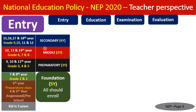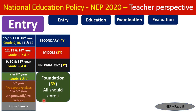NEP 2020 gives education in four levels: Foundation (5 years), Preparatory (3 years), Middle (3 years), and Secondary (4 years) — totaling 15 years of schooling. The policy ensures that all kids registered in the foundation course continue through secondary level until age 18.